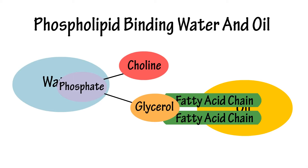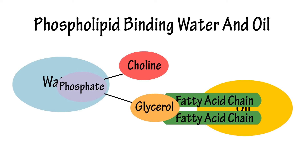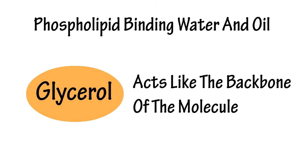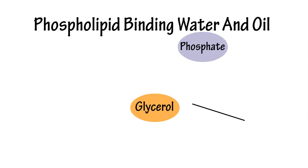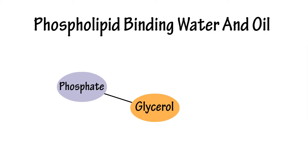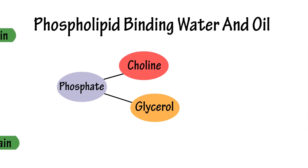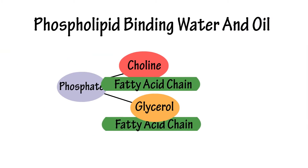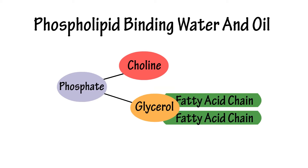We're going to go through this in a very general sense. Let's start with a little deeper look into a phospholipid or fat molecule. We start with a glycerol group, which acts like the backbone of the molecule. Attached to it is a phosphate group. And in lecithin, there is a choline group attached to the phosphate group. Lastly, we have two fatty acid chains that are attached to the glycerol group.